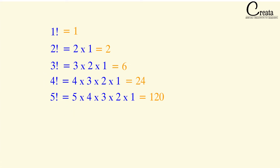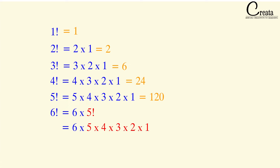What is 6 factorial? 6! = 6 × 5! = 6 × 5 × 4 × 3 × 2 × 1, and 5 × 4 × 3 × 2 × 1 is just 5! = 120. So 6! = 6 × 120 = 720. If you know the factorial of any value, you can calculate the next factorial by multiplying that next number with the previous factorial.